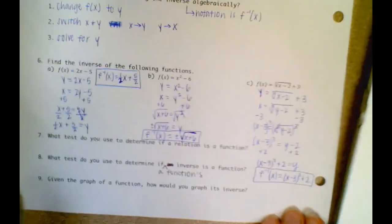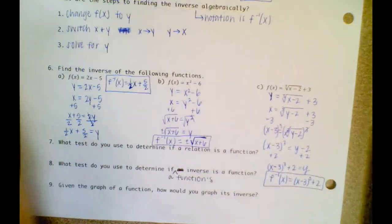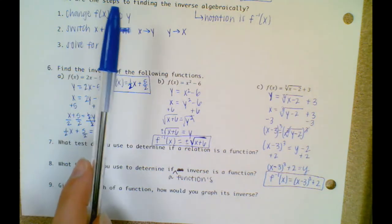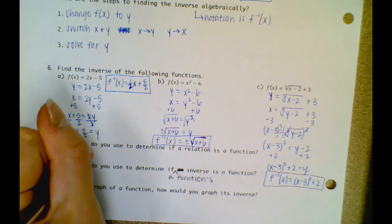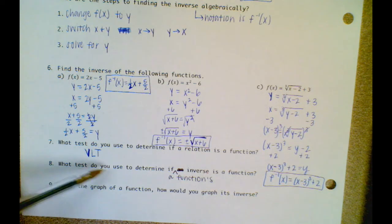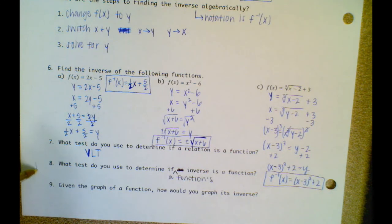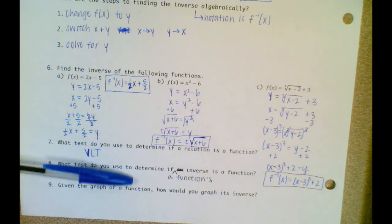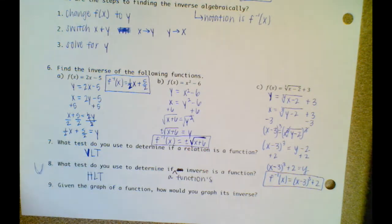Last couple of questions here. What test do you use to determine if a relation is a function? If I give you a graph or a set of data points, you can determine if a relation is a function by using the vertical line test. There's an error right here — you might want to fix this on your paper. It says: what test do you use to determine if a function's inverse is a function? You would use the horizontal line test. So no, that inverse would not be a function of this graph.